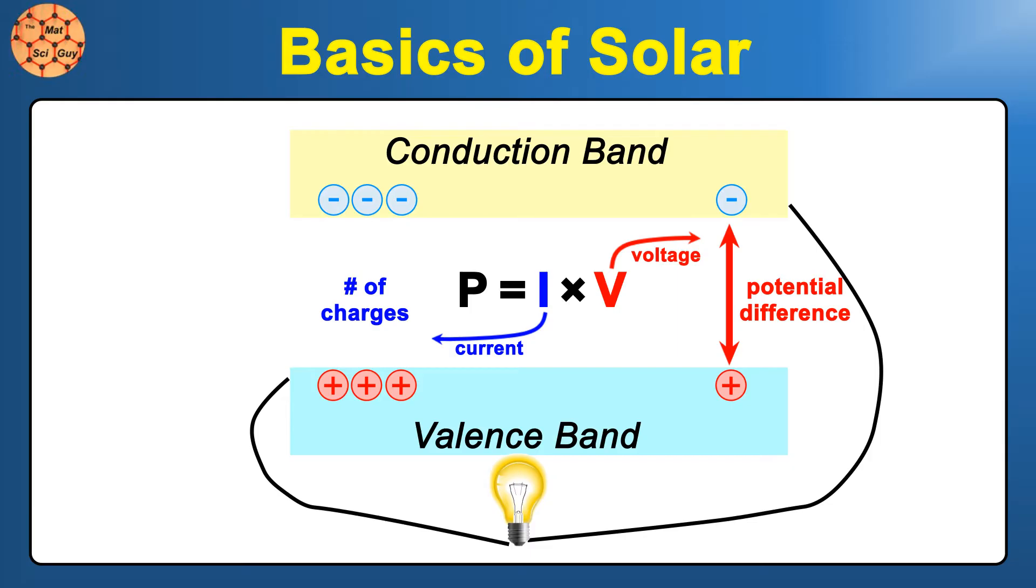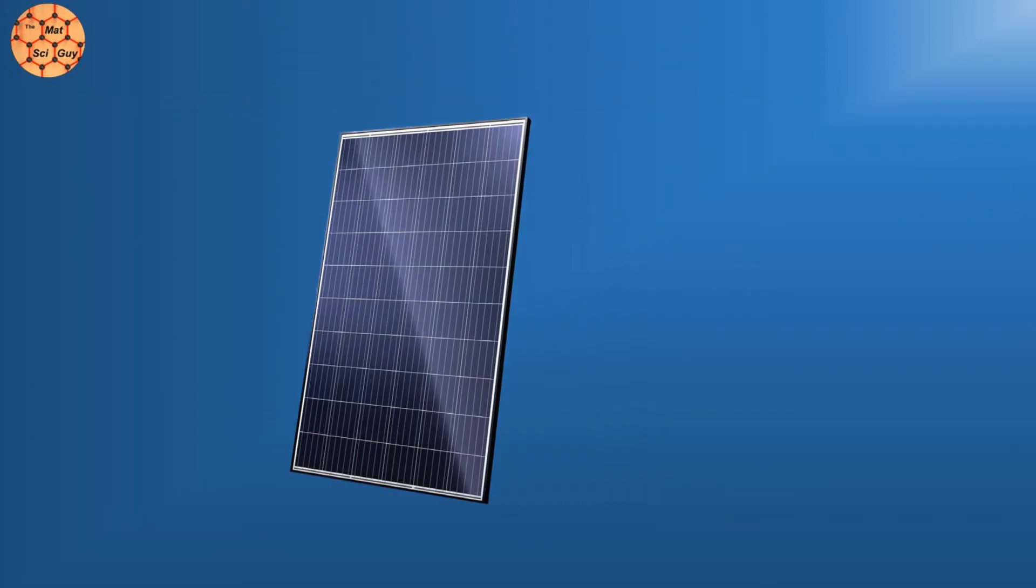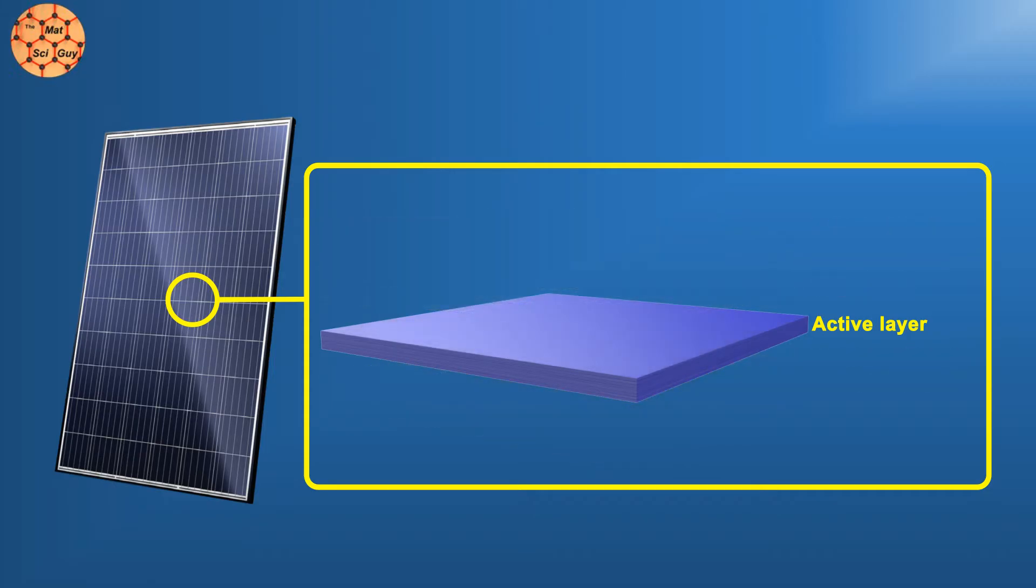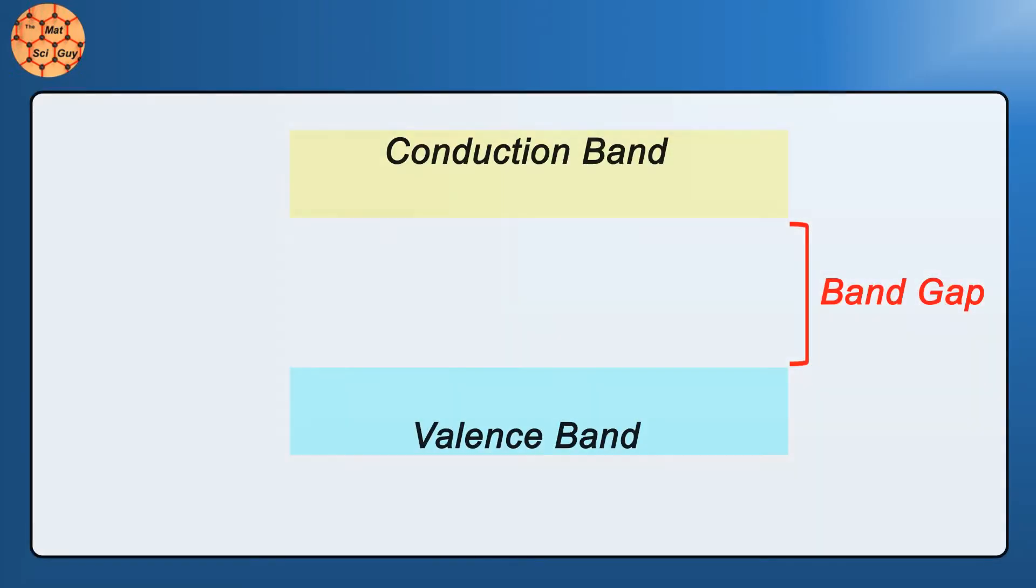Now that the basics are out of the way, let's start to think about what makes a good solar material. In a real solar panel, there are obviously several materials, including our old friend indium tin oxide, but the one actually absorbing light and creating these electron-hole pairs is the one we're interested in. This is called the active layer. There are several things we look for in a good active layer material, but one particularly important one is how wide the band gap is.